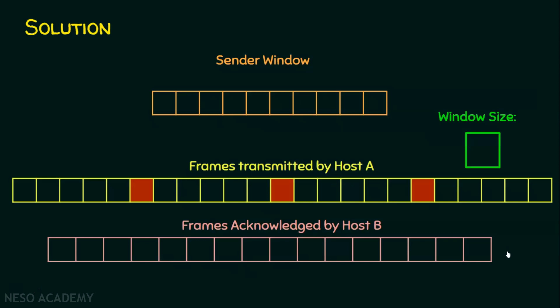The window size is mentioned indirectly — GoBack4 means the window size is 4. The sender has 10 frames, each assigned a sequence number from 1 to 10. In GoBack-N, which is a sliding window protocol, with window size 4, the sender transmits 4 frames before expecting an acknowledgement from host B.